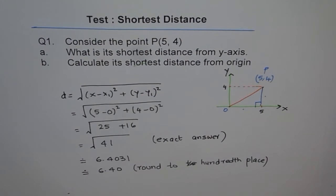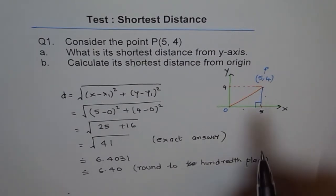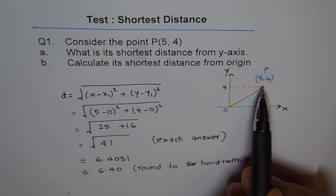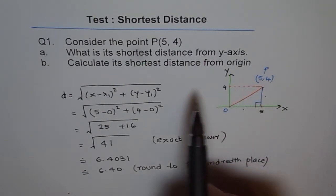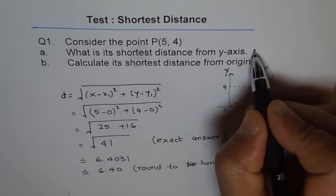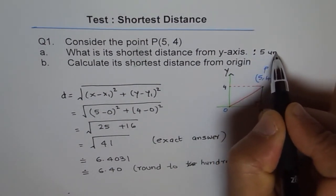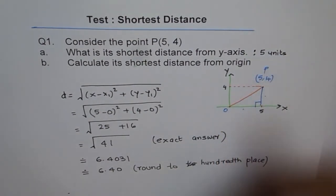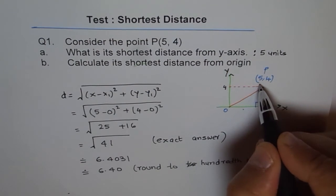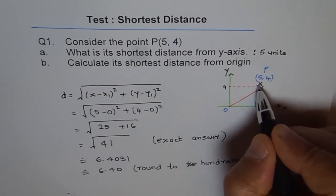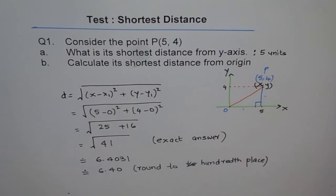So try to understand these terms as we move on. So this is our first example on shortest distance, correct? So the shortest distance of any point from y-axis will be its x-coordinate. So the shortest distance from y-axis is 5 units. So in general you learn that the shortest distance from y-axis will be the x-coordinate.